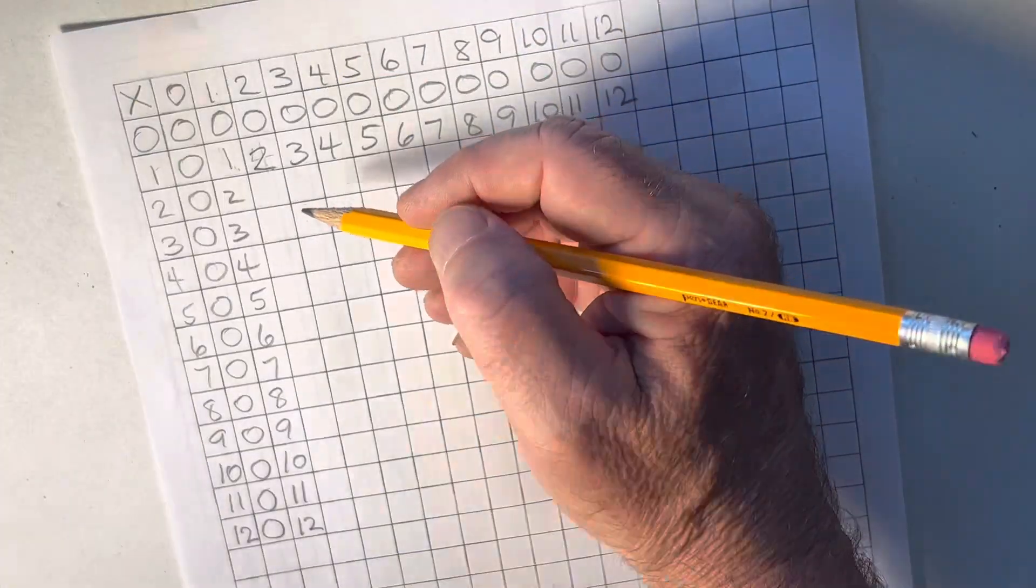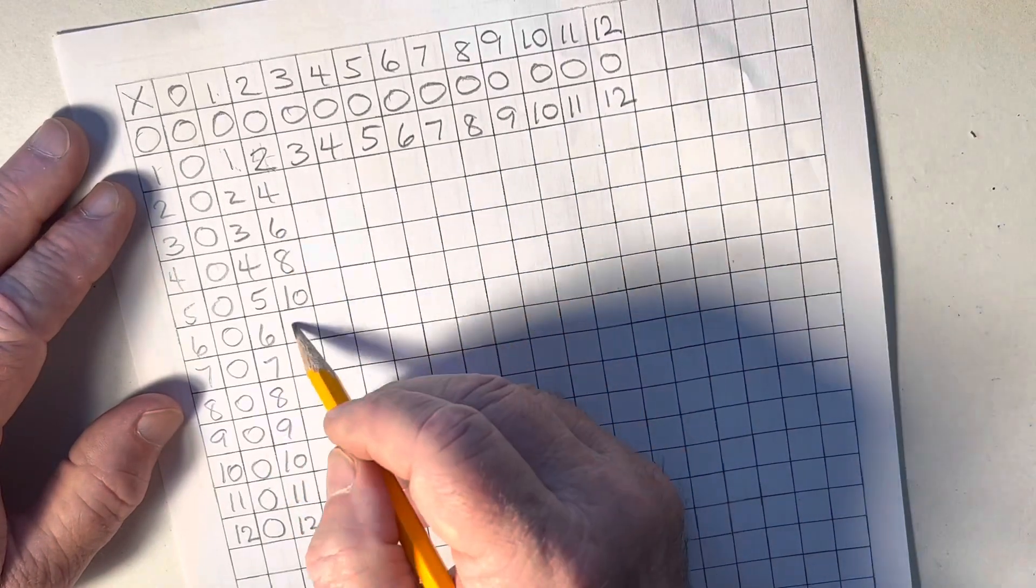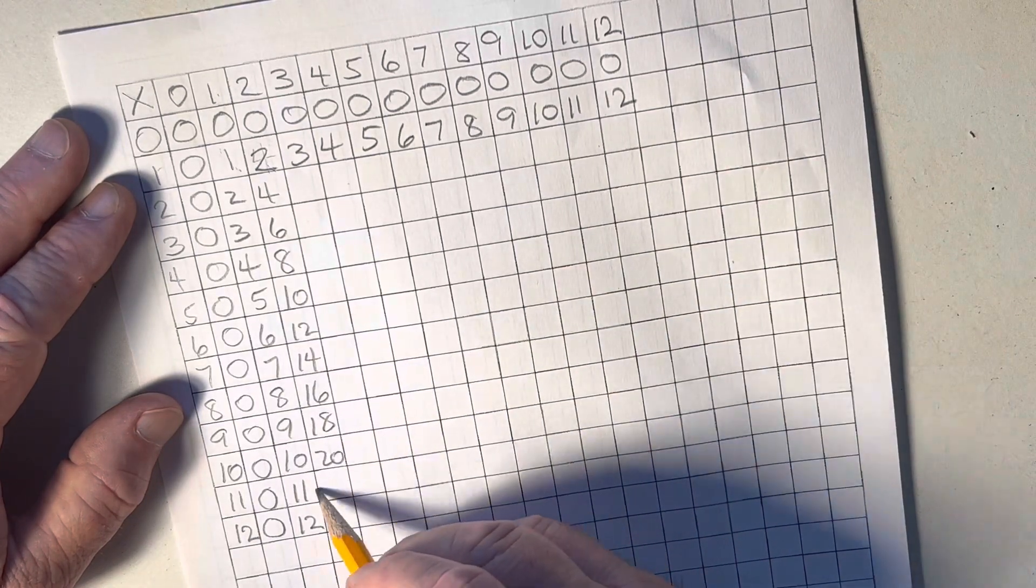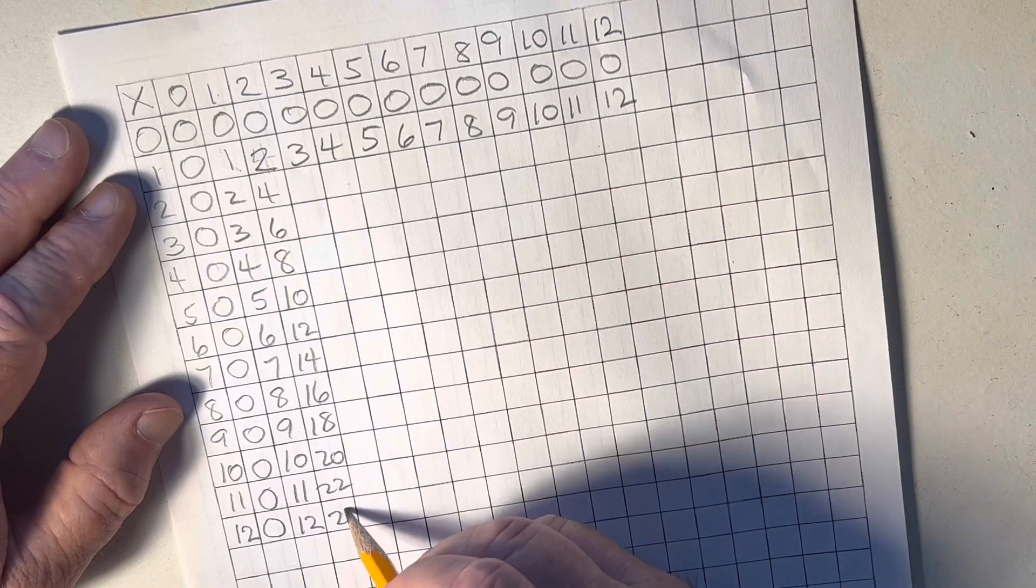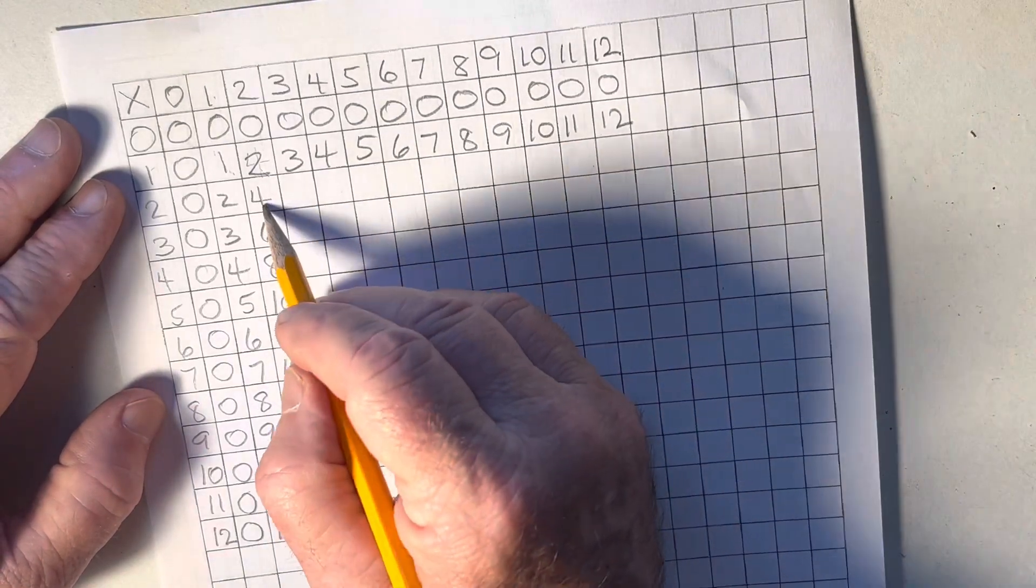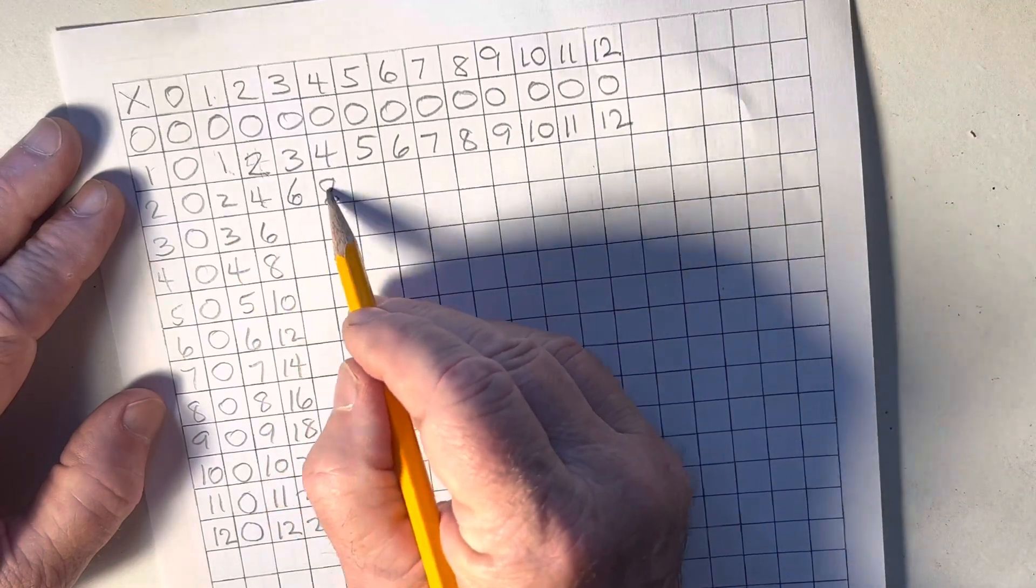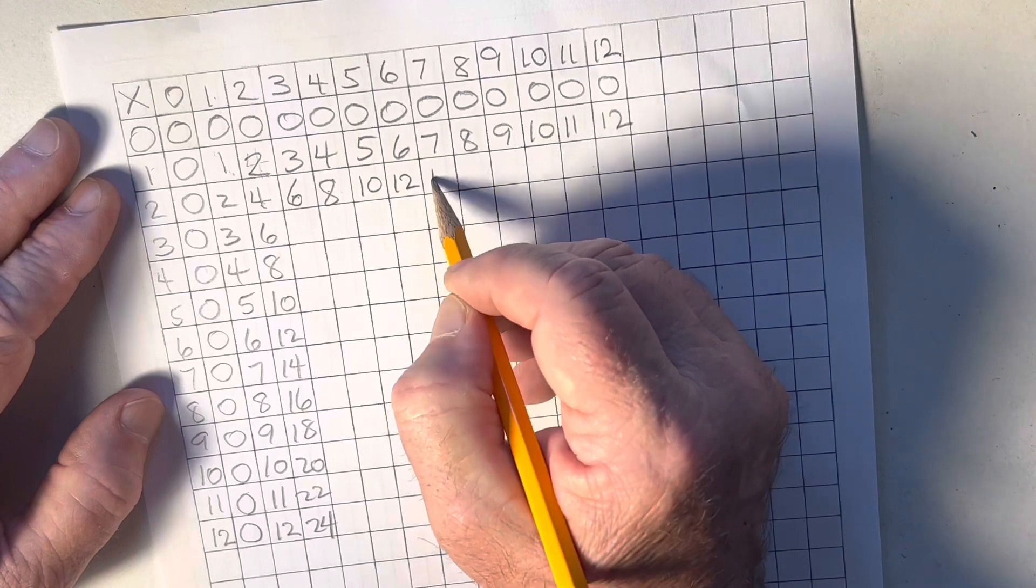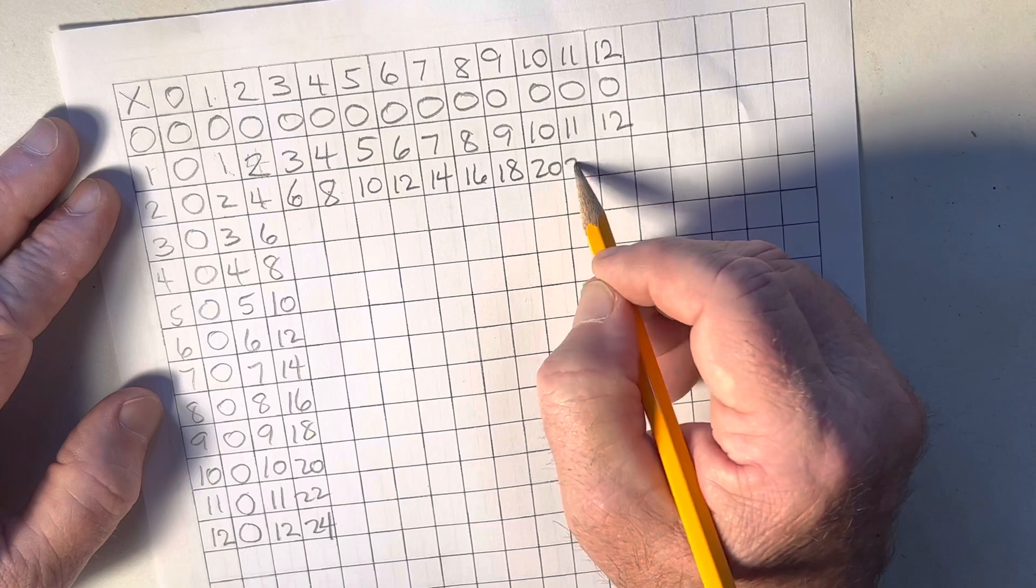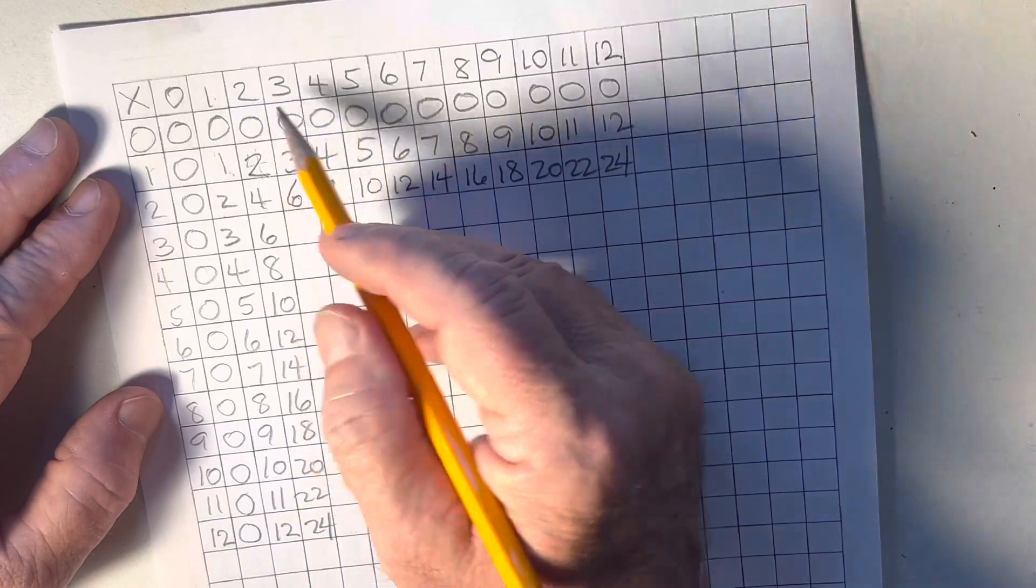Begin with the even ones because the students already know these. They're easy. So we've got 2, 4, 6, 8, 10, 12, 14, 16, 18, 20, 22, 24. And remember, all we're doing is adding. Multiplication is repeated adding. I'm just adding the numbers. 4 plus 2 is 6, 6 plus 2 is 8. 2, 4, 6, 8, 10, 12, 14, 16, 18, 20, 22, 24. Okay, those are the even numbers, the twos.